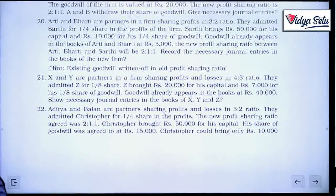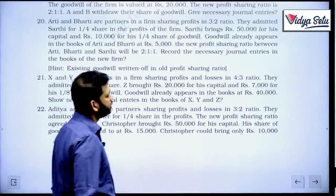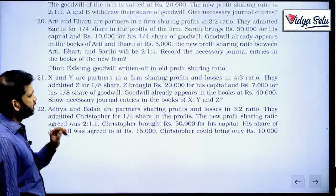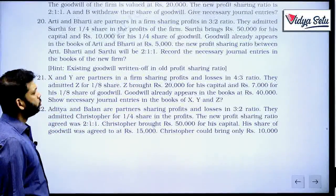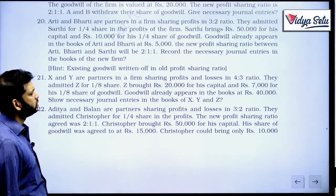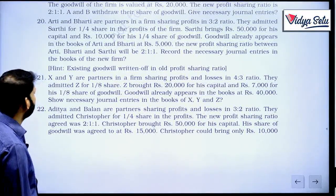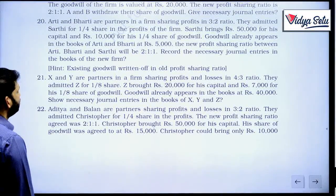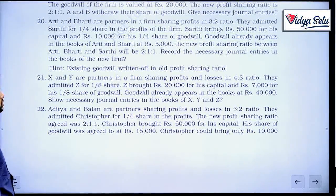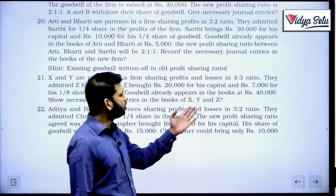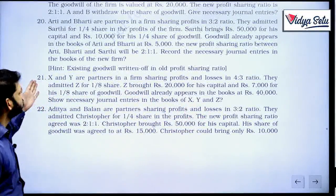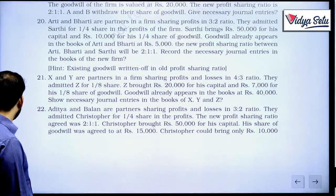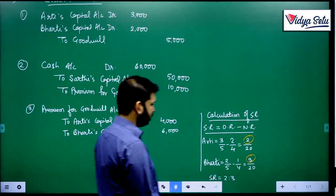X and Y are partners in a firm sharing profits and losses in the ratio 4 to 3. They admitted Z for one-eighth share. Z brought rupees 20,000 for his capital and 7,000 for his one-eighth share of goodwill. Goodwill already appears in the books at 40,000. Show necessary journal entries. Again the same question where this 40,000 will be distributed amongst the old partners in the old ratio. Simple question, let us solve it quickly.